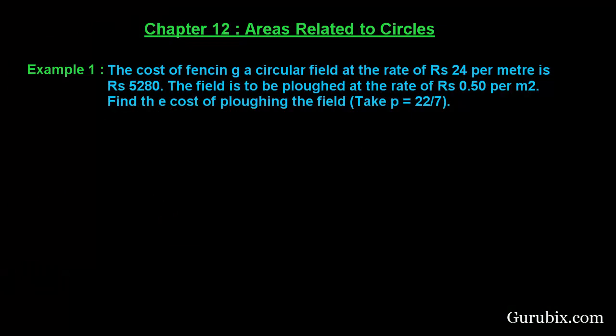Welcome friends, let us solve example number one of chapter 12. The question says: the cost of fencing a circular park at the rate of rupees 24 per meter is rupees 5280. The field is to be plowed at the rate of rupees 0.50 per meter square. Find the cost of plowing the field. Take pi equals to 22 over 7.